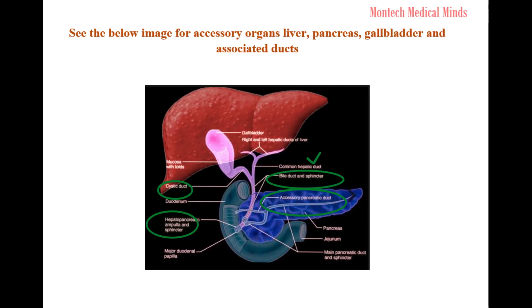See the image below for the accessory organs — liver, pancreas, gallbladder — and their associated ducts.